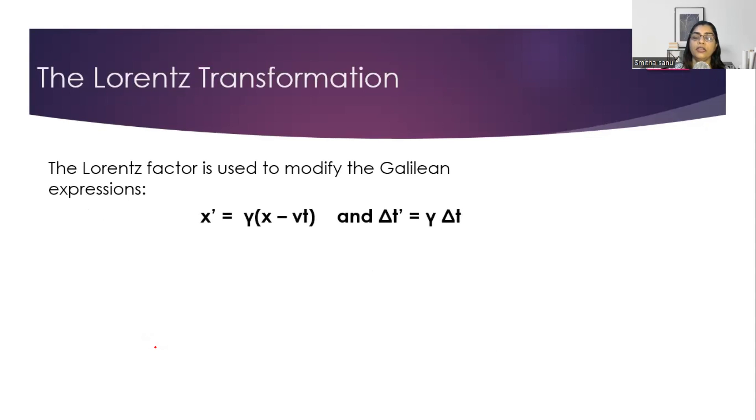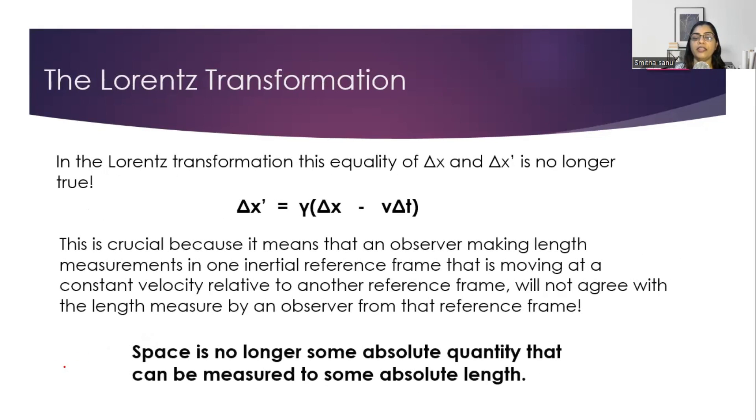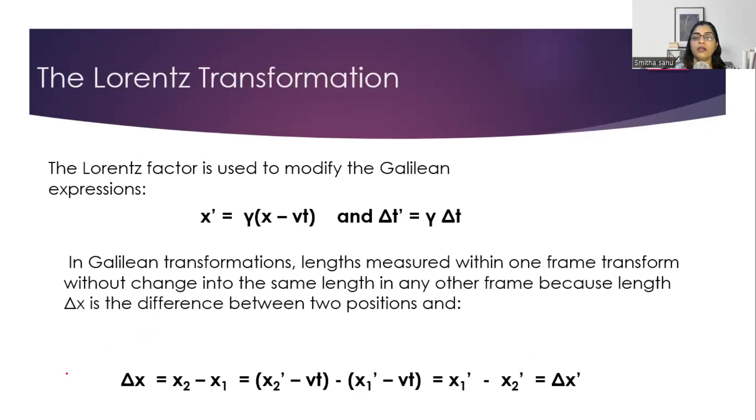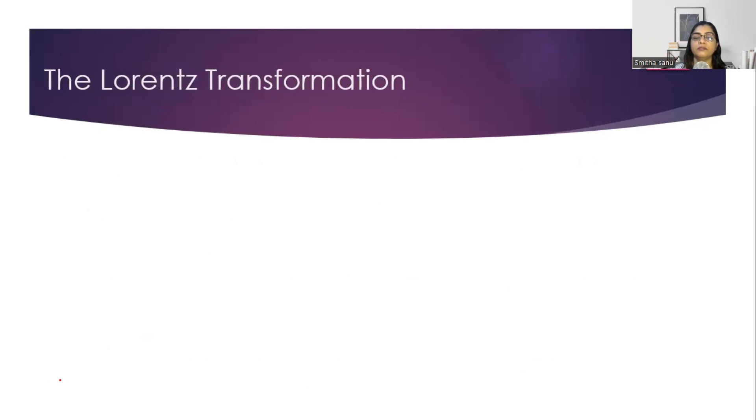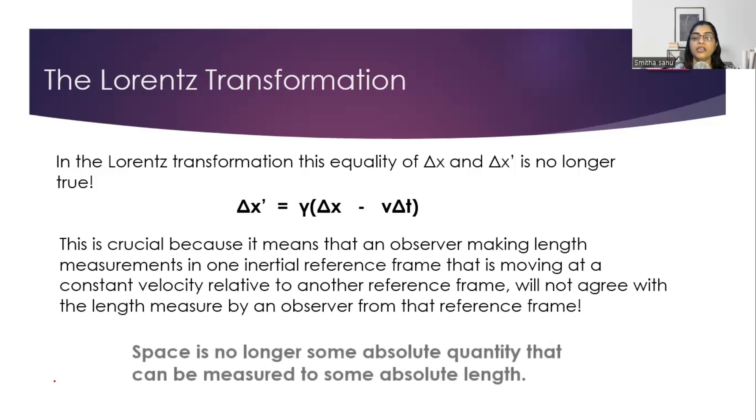So, in Galilean transformation, the measurement of length was seen to be same. If you look at this equation, the measurement of length in Galilean transformation was same. While in Lorentz transformation, the length was measured to be different in both the frames of reference. Thus, Einstein's theory of relativity came up with the concept that something that was regarded to be same constant is no more a constant. Space is no more a constant or it's not an absolute quantity. It is something that's going to be measured differently in both the frames of reference.